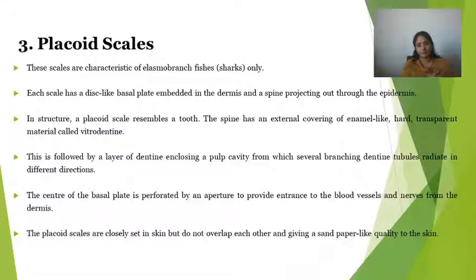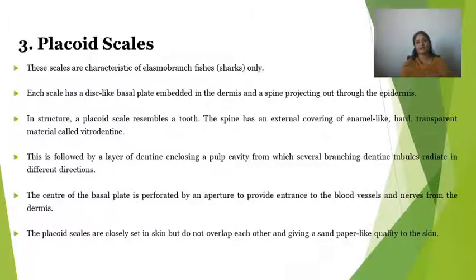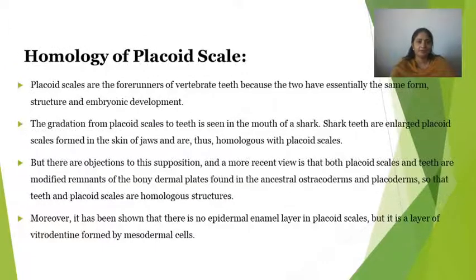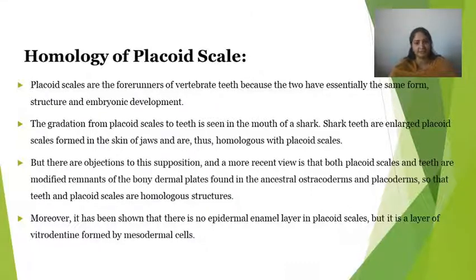A dermal pore allows nerves and blood vessels to enter. Placoid scales are closely set in the skin but do not overlap each other, giving a sandpaper-like quality to the skin. Regarding homology, Placoid scales are considered the forerunner of vertebrate teeth, because the two have essentially the same form, structure, and embryonic development. Gradation from Placoid scales to teeth is seen in the mouth of a shark. Shark teeth are enlarged Placoid scales formed under the skin of the jaws and are thus homologous with Placoid scales.